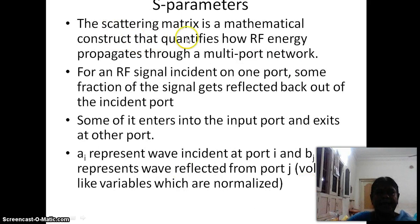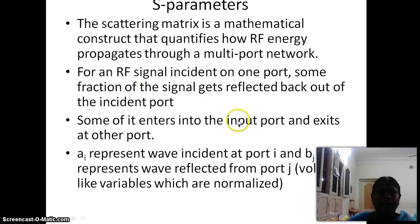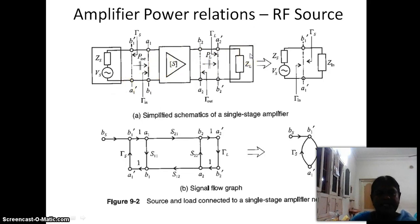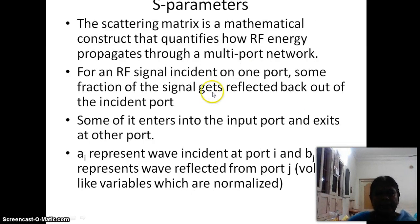What do we mean by S parameters? The scattering matrix is a mathematical construct that quantifies how RF energy propagates through a multiport network. For an RF signal incident at one port, some fraction of the signal gets reflected back out of the incident port and some of it enters the port and exits at another port. A_i represents the wave incident at port i and B_j represents the wave reflected from port j.